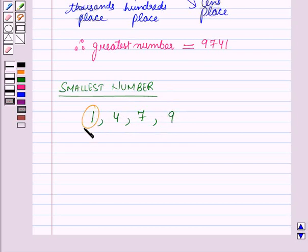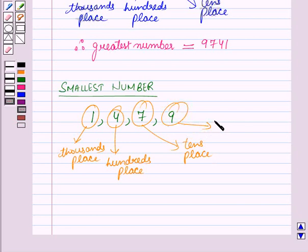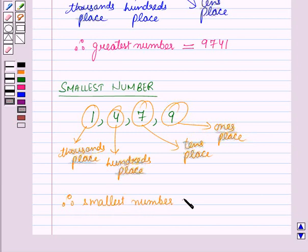we will put the digit which is the least, 1, at the thousandths place, then 4 at the hundredths place, then 7 at the tens place, and 9 at the ones place. Therefore, the smallest number formed is 1,479.